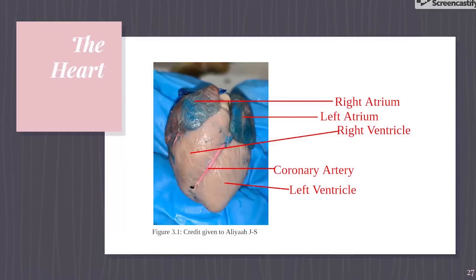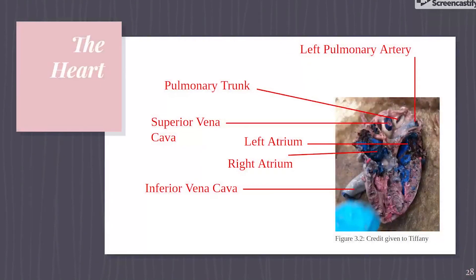The left atrium is located on the left posterior side of the heart. Its primary roles are to act as a holding chamber for blood returning from the lungs and to pump blood to other areas of the heart. The left ventricle is located at the bottom left portion of the heart below the left atrium, separated by the mitral valve. As the heart contracts, blood flows back into the left atrium and then through the mitral valve into the left ventricle. Figure 3.2 shows a cross section of the pig heart. The left pulmonary artery transports oxygen-depleted blood away from the heart and back towards the lungs, with the main artery splitting into left and right pulmonary arteries directing blood into each corresponding lung.